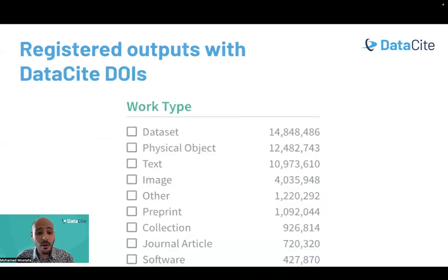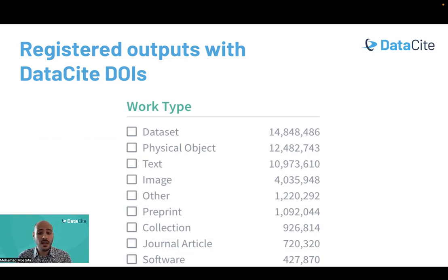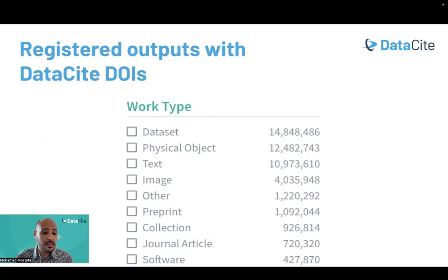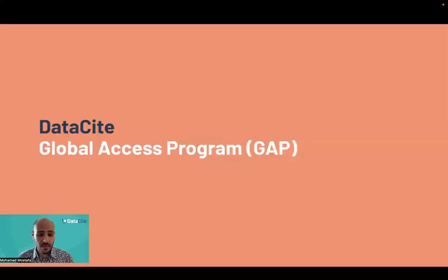This is an example of the different work types registered with DataCite DOIs, from our own DataCite registry. As we can see, we have almost 15 million datasets, 12 million physical objects, 4 million images, and 1 million preprints. All this wide range of resources is registered through our 1,400 research organizations that we collaborate and work with.